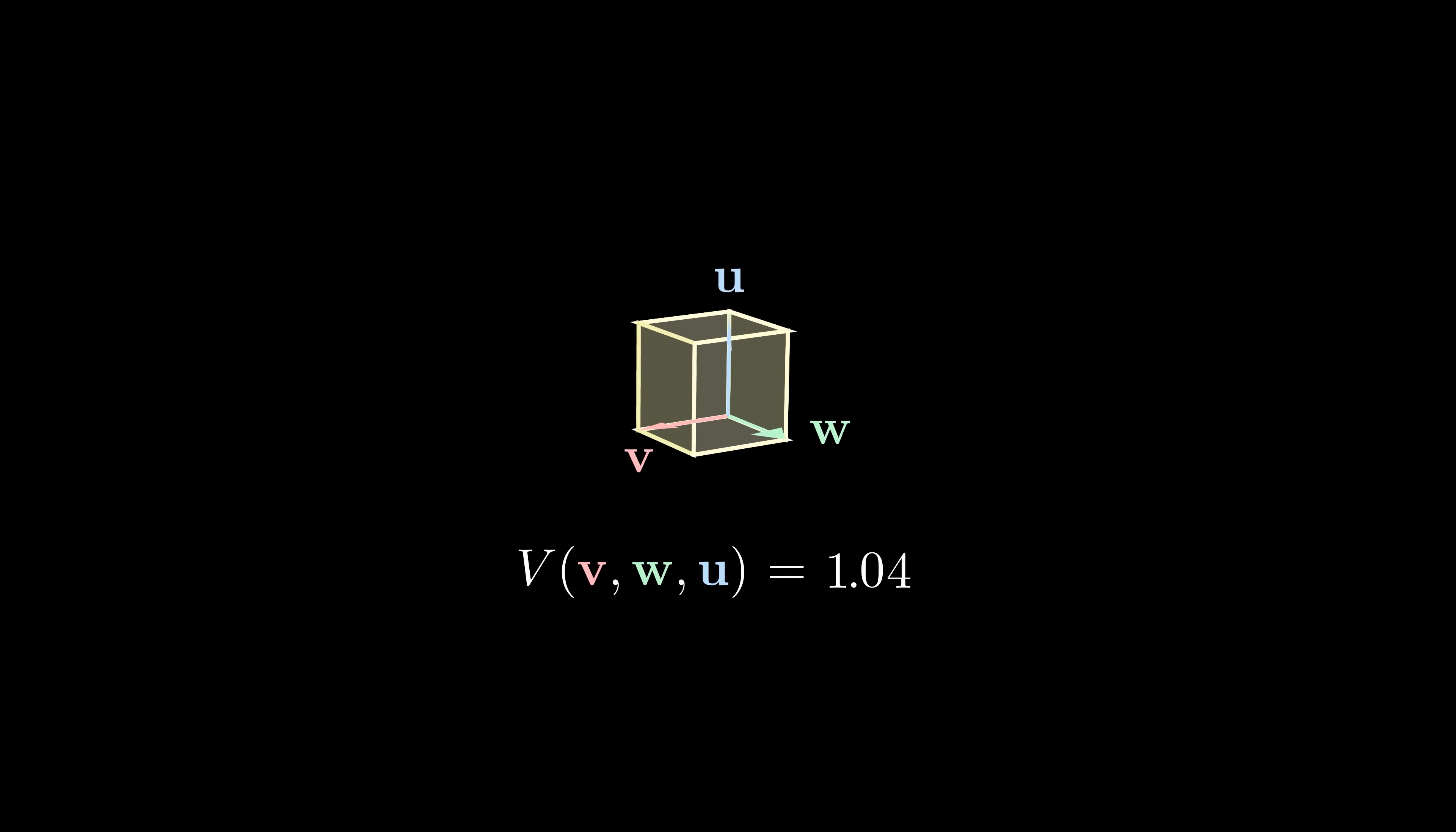For example, the volume of the unit cube, spanned by basis vectors i hat, j hat and k hat, should be equal to 1.